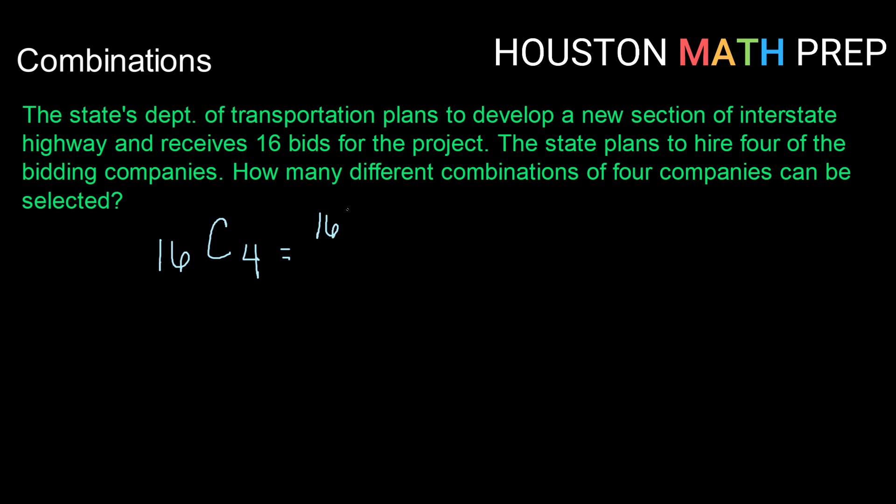So that means we would be working with 16 factorial divided by 16 minus 4 factorial times 4 factorial.